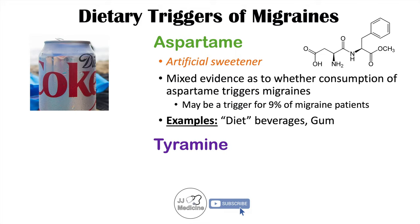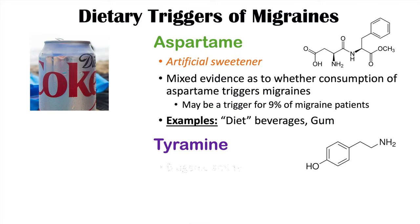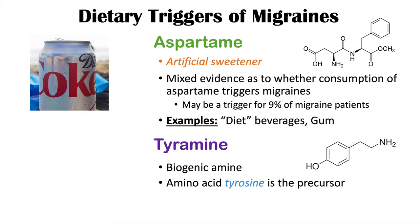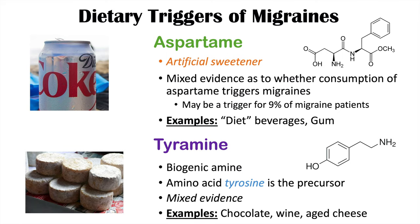Tyramine is also a possible dietary trigger of migraines. It is a biogenic amine derived from the amino acid tyrosine, though evidence is mixed on whether it triggers migraines. Tyramine can be found in chocolate, wine, and aged cheese. Aspartame in diet beverages and tyramine in these foods are both possible triggers of migraine headaches.